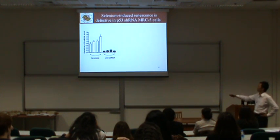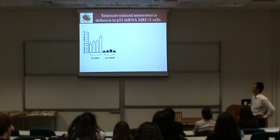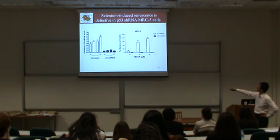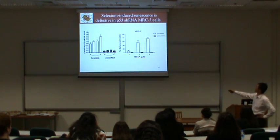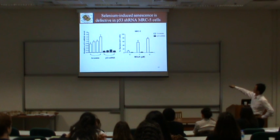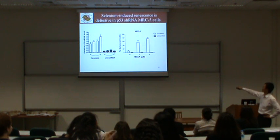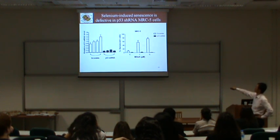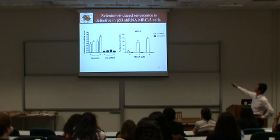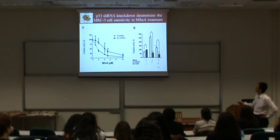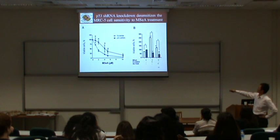We have four different clones with knockdown efficiency of about 85 percent. We chose the most effective clone and treated scramble control cells and p53-knockdown cells with selenium. Cells expressing p53 show a selenium dose-dependent induction of senescence, but in p53-knockdown cells there is no selenium-induced senescence.